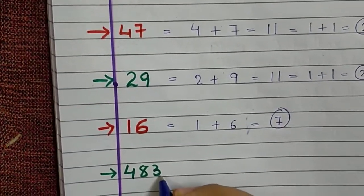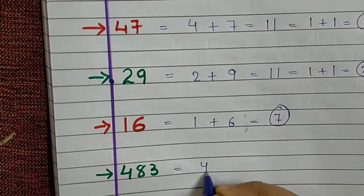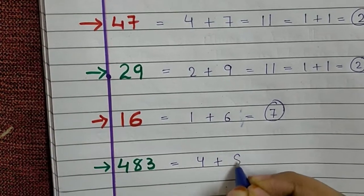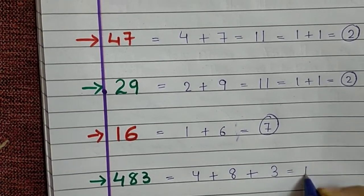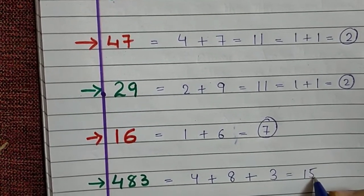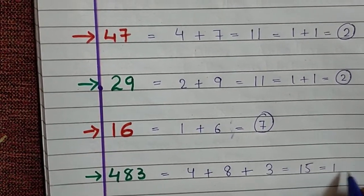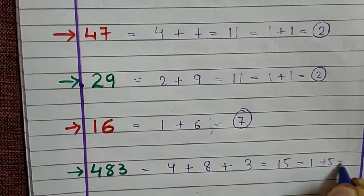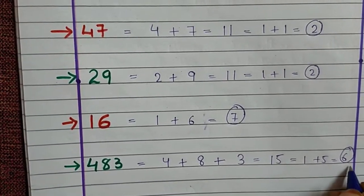The sixth number is 483. 4 plus 8 plus 3 is equal to 15. Again we will add 15 because it is a 2 digit number and we want a single digit number. So 1 plus 5 is equal to 6. So the Beejank of 483 is 6.